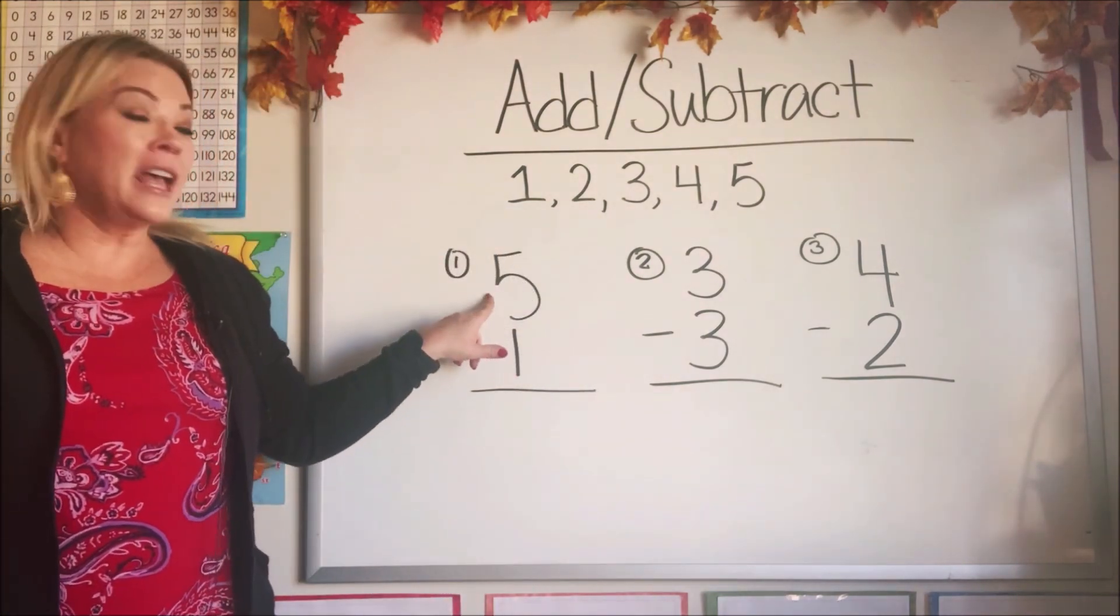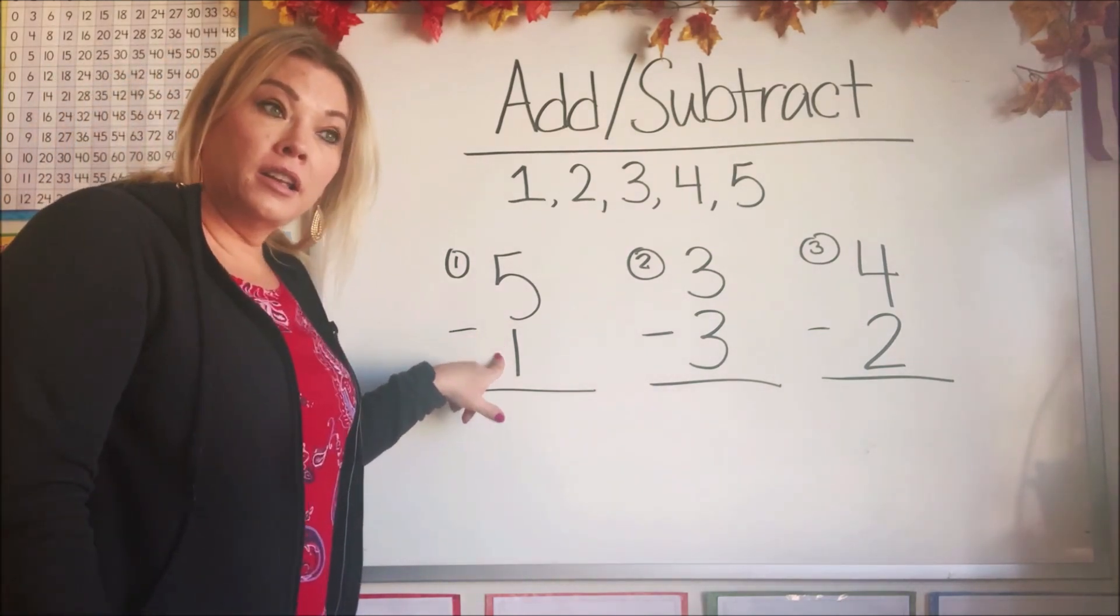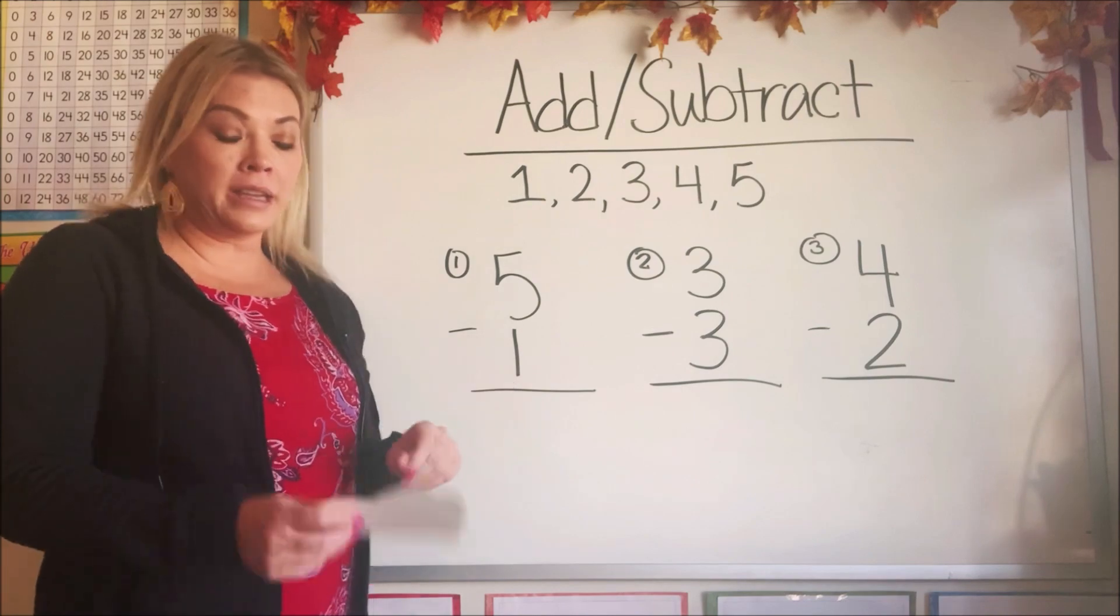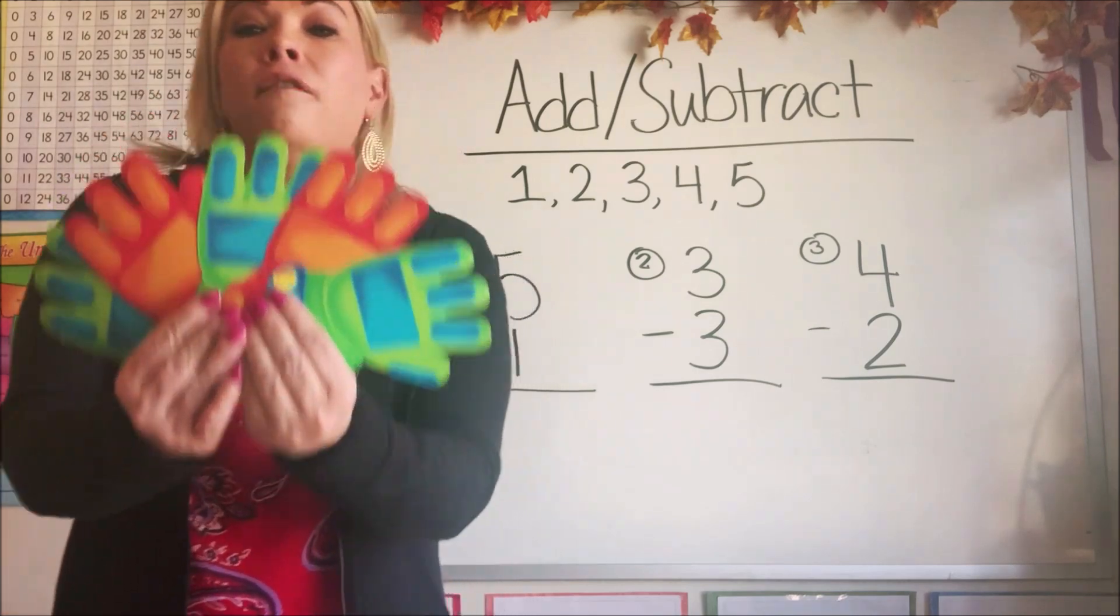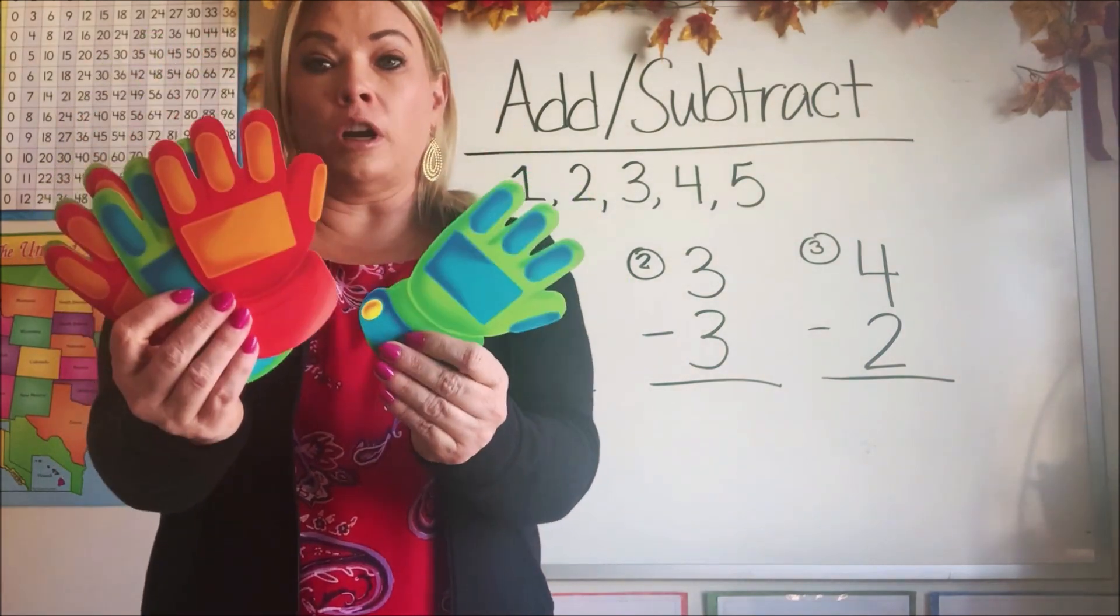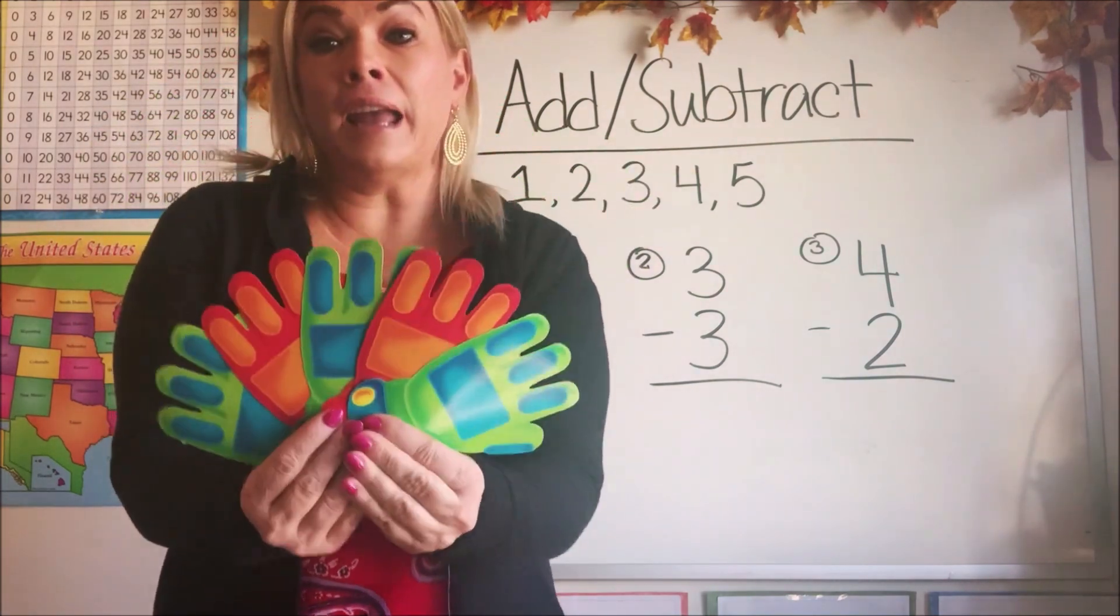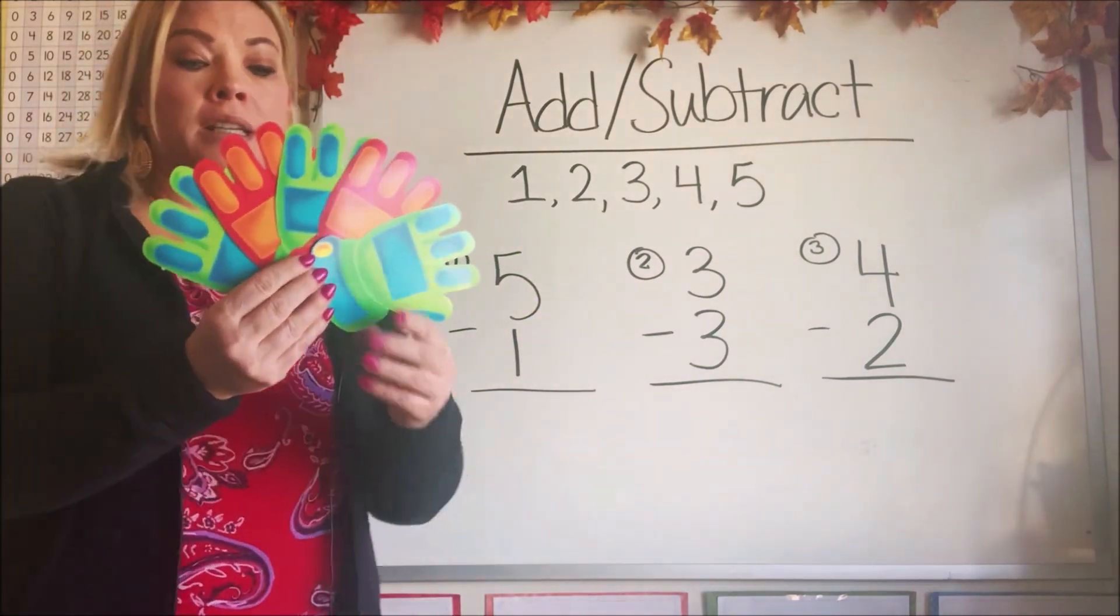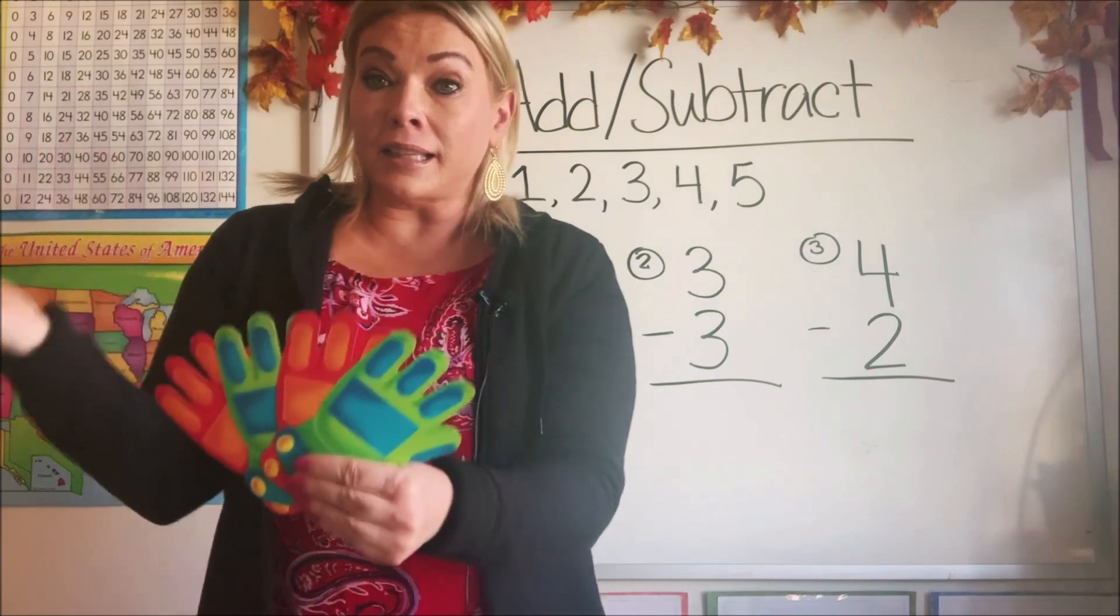So the first one says five minus or subtract one. So that means we have five of something, and we're going to take one away. So I have five hands, or maybe they're gloves. And I have five of these. Should we count them? One, two, three, four, five. They're blue and green and orange and red. So we have five hands, or gloves, and it says we need to subtract one. So let's take one of these and put it off to the side.